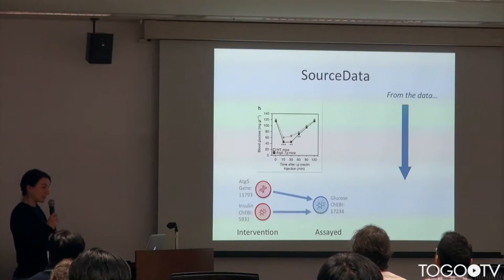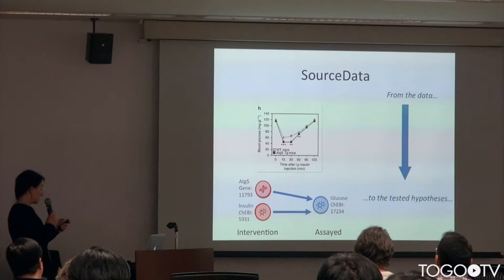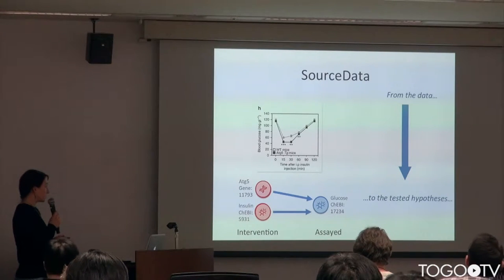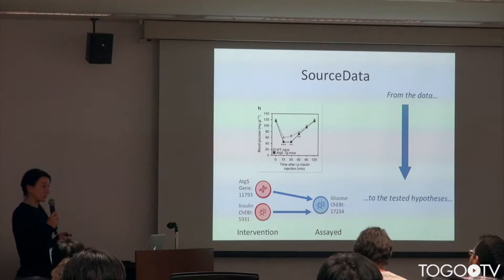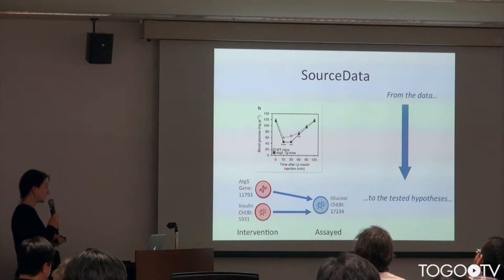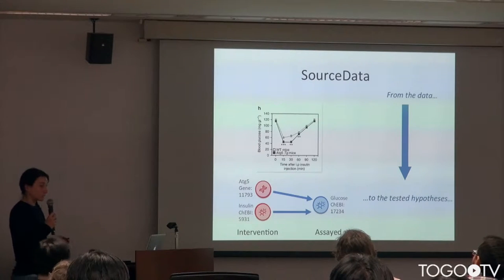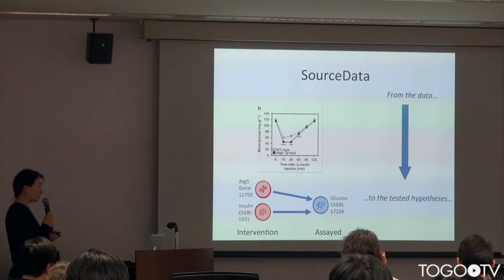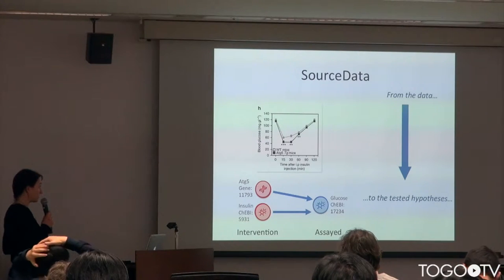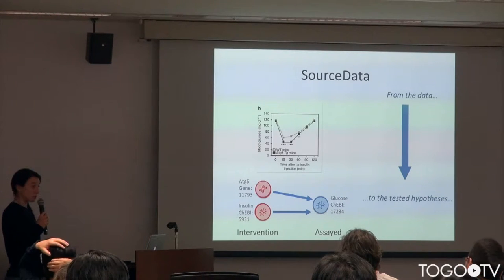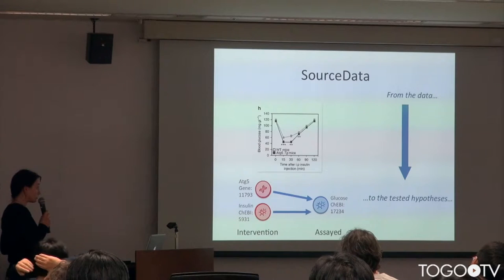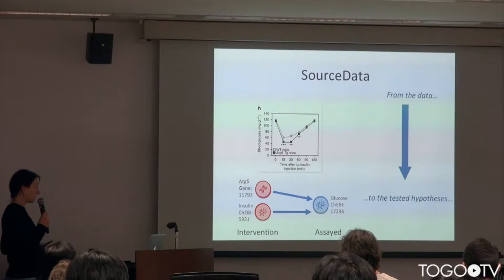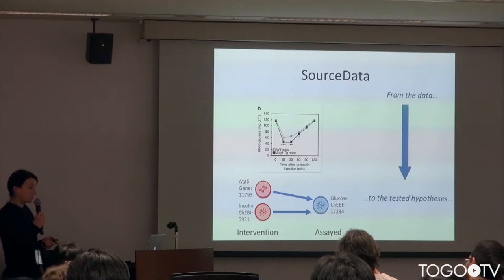As Thomas explained in his presentation, SourceData is designed to annotate figures representing experiments by tagging the entities of the figure legends. These entities are characterized by mainly two properties: the type, from small molecules to organisms, linked to identifiers of official databases like NCBI genes or UniProt. And the second property is the role, like intervention or assay, allowing to represent the hypothesis of the experiment.